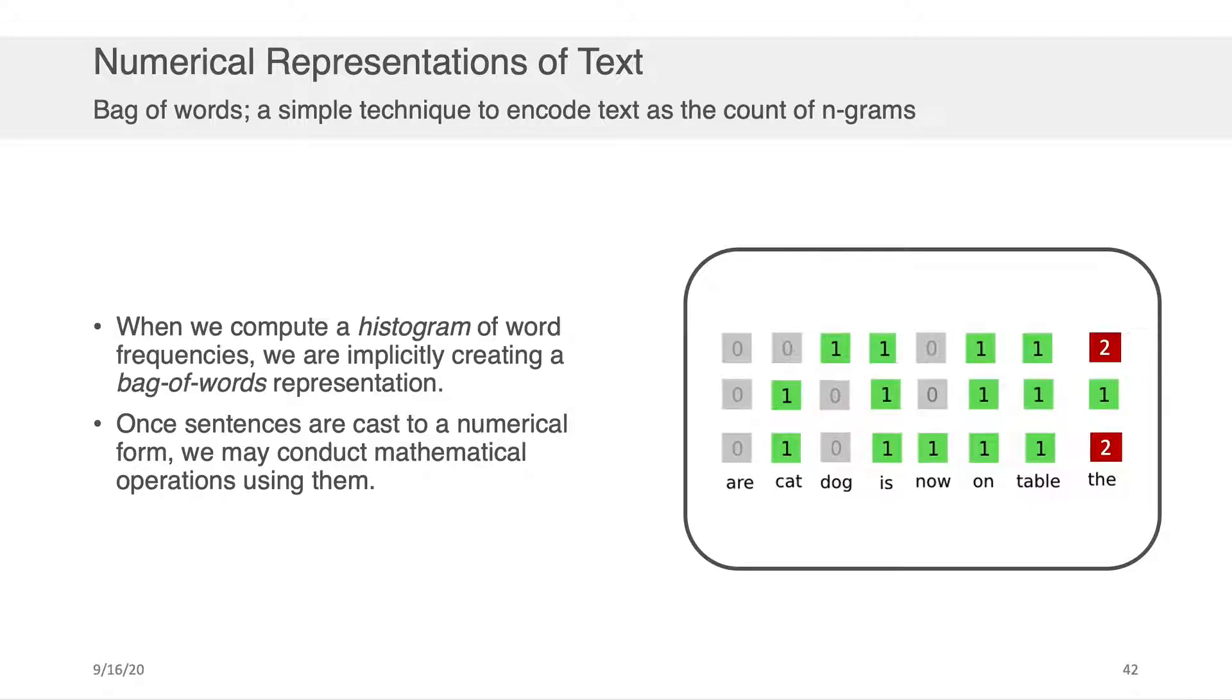Well, effectively, what we were doing was assigning an index to each of the words and then summing up the incidents that we saw at those particular indices. And so, bag of words is effectively what we intuitively do when we want to do things like count words.